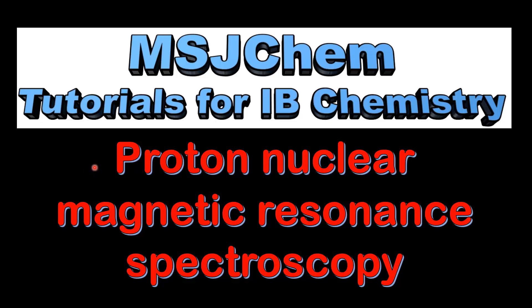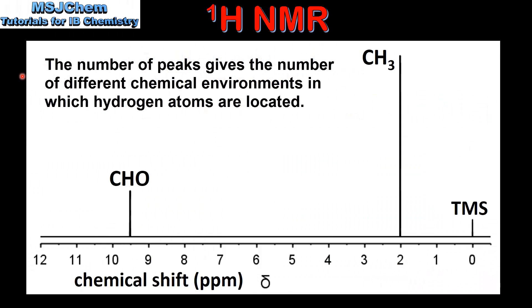This is MSJChem. In this video I'll be looking at Proton Nuclear Magnetic Resonance Spectroscopy. We'll start by looking at a HNMR spectrum. The number of peaks gives the number of different chemical environments in which hydrogen atoms are located. In this spectrum, which is for ethanol, we can see there are two peaks.